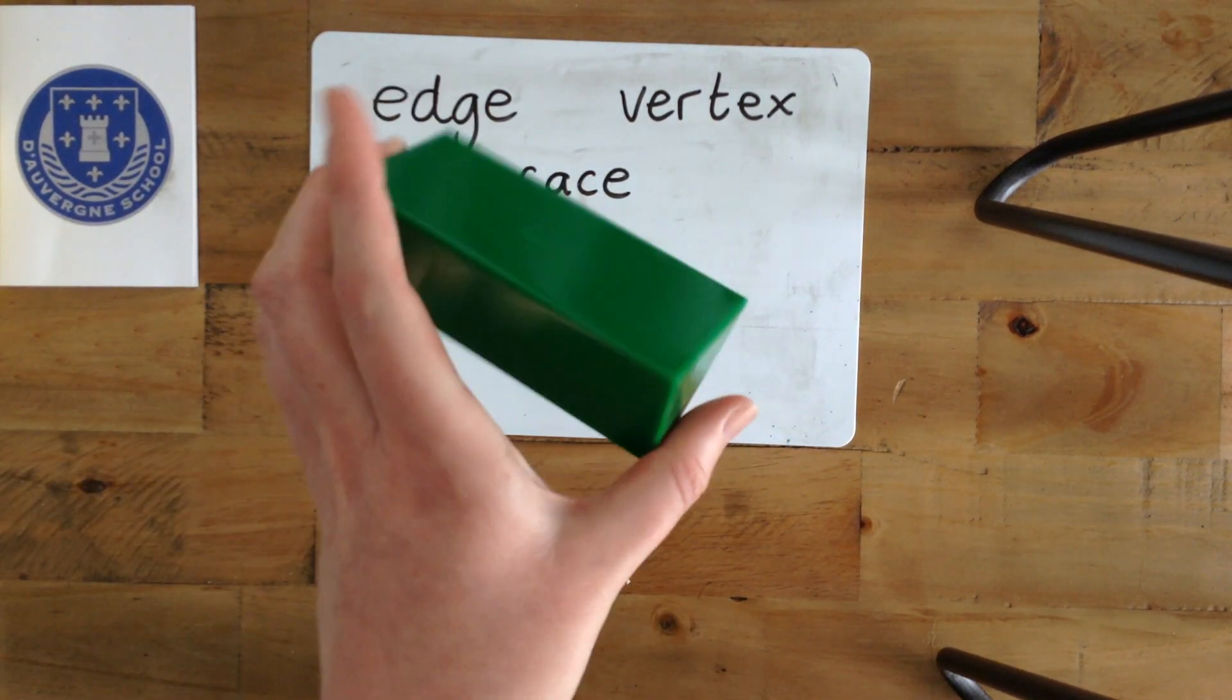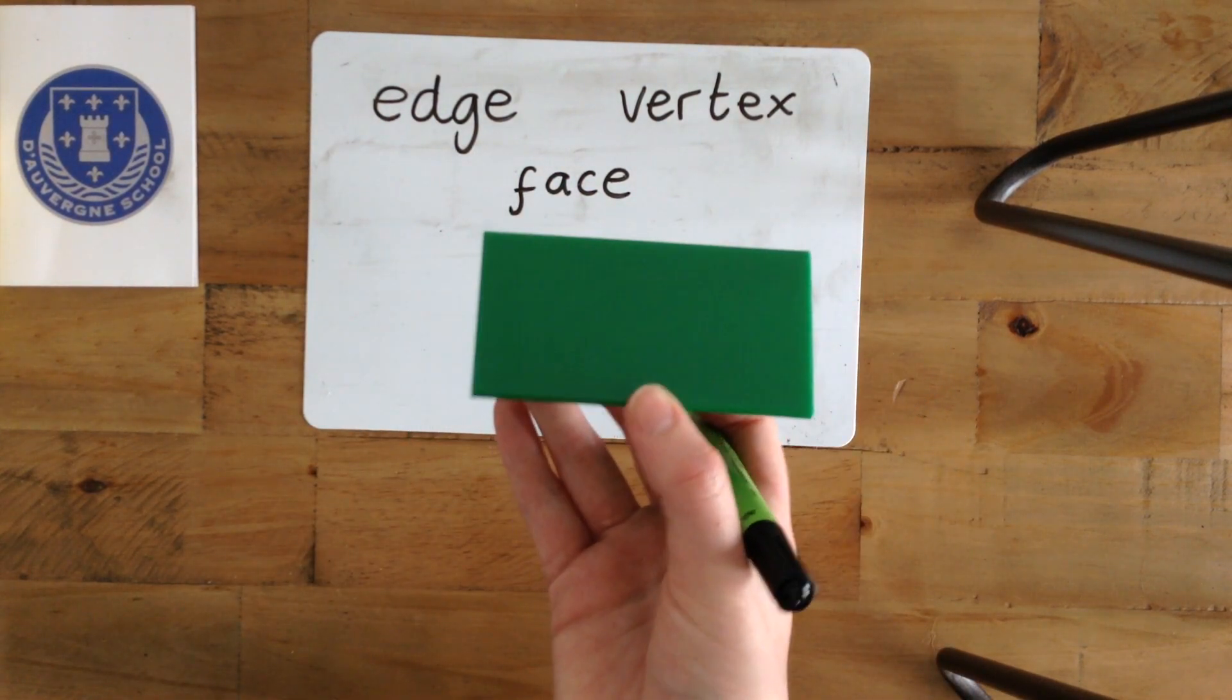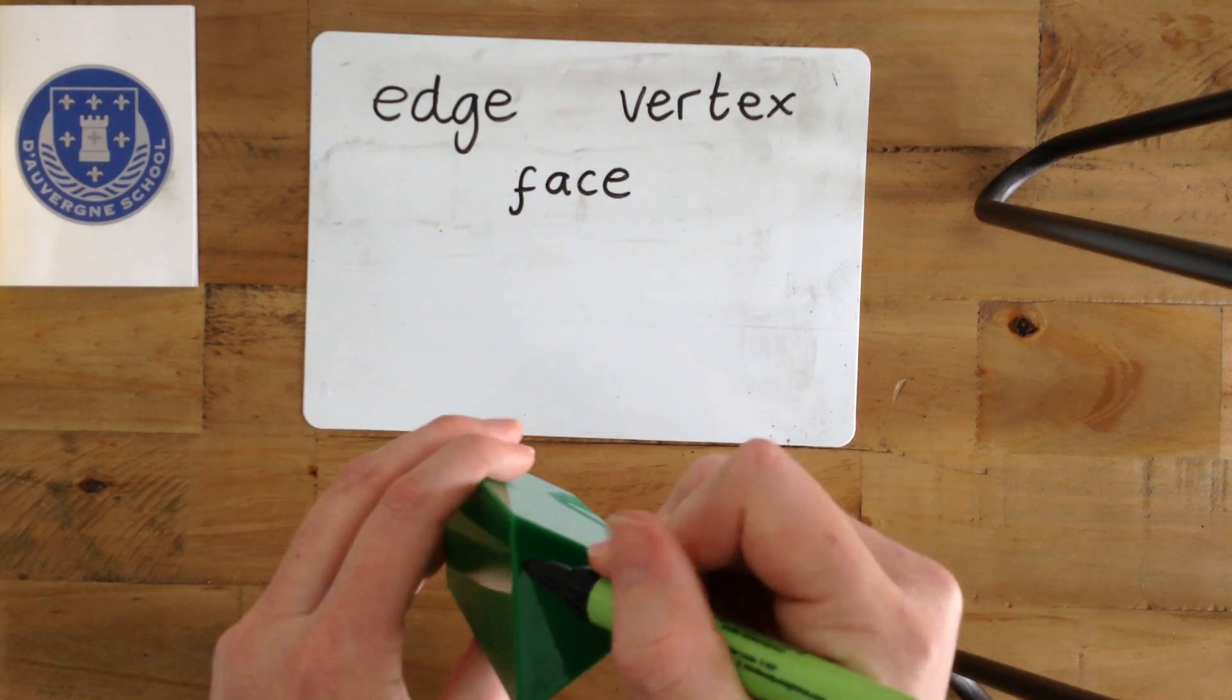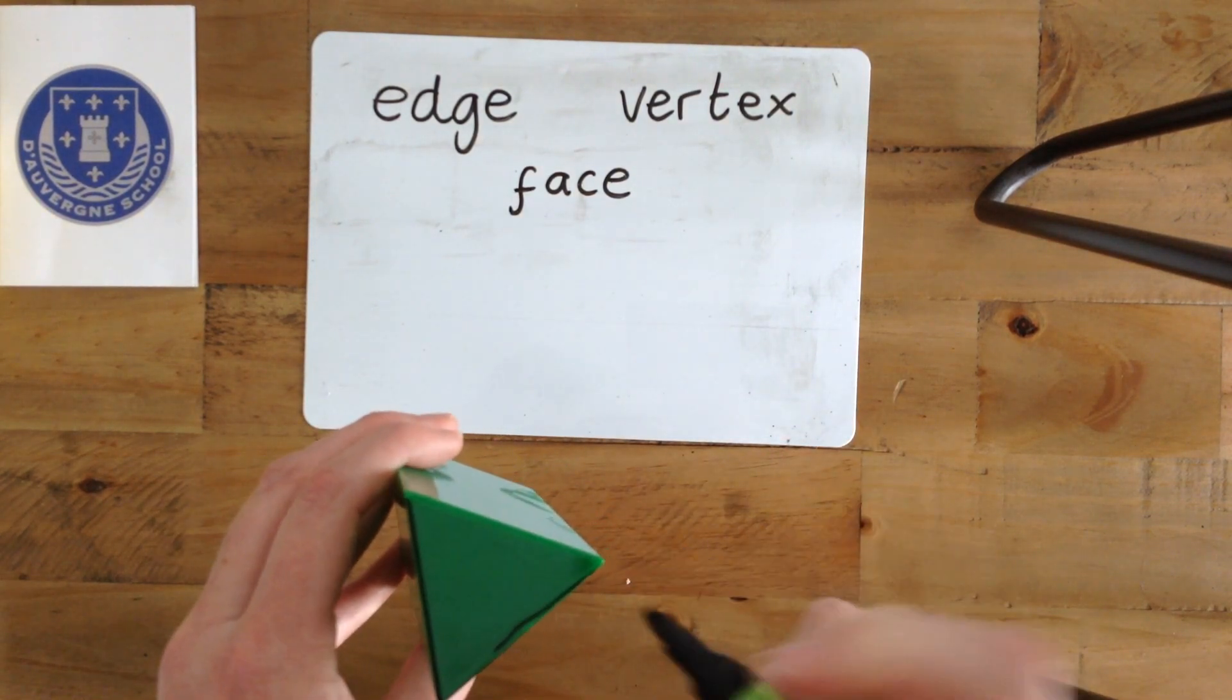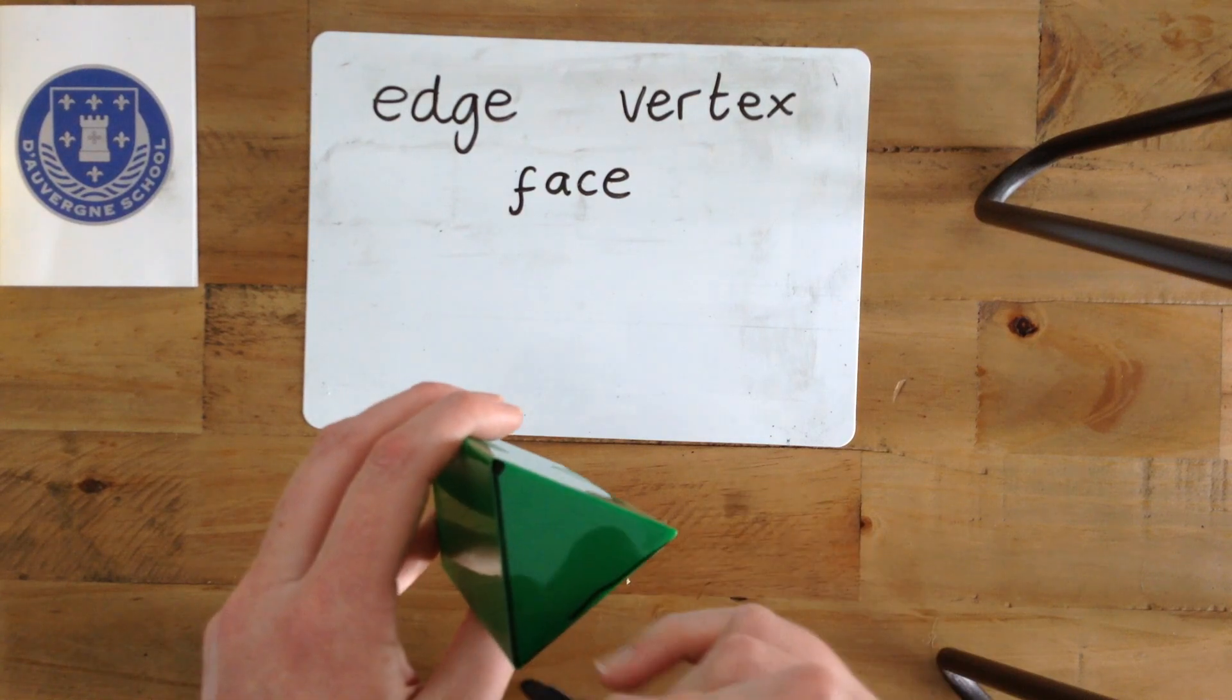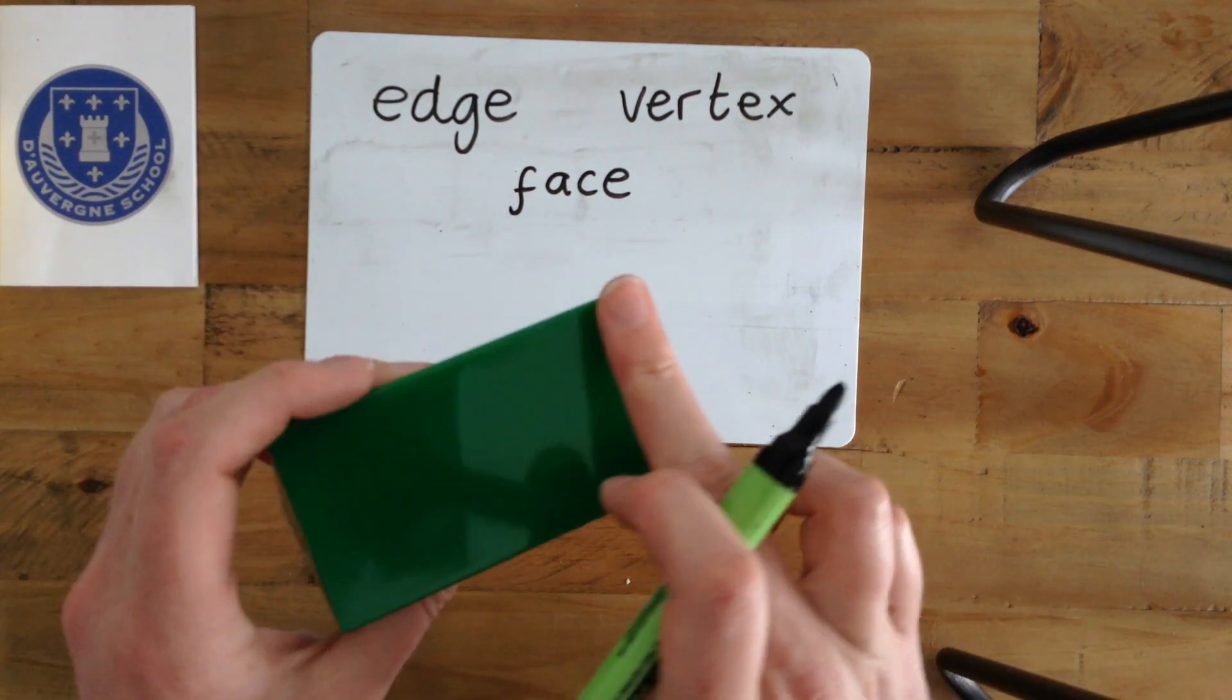Our next shape is a prism. It's a bit tent-shaped. We have our edges and our vertices. We also have our faces.